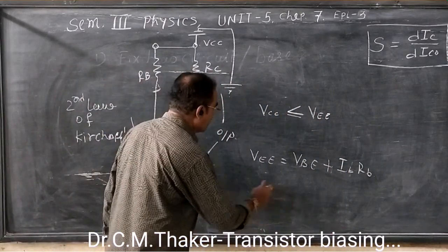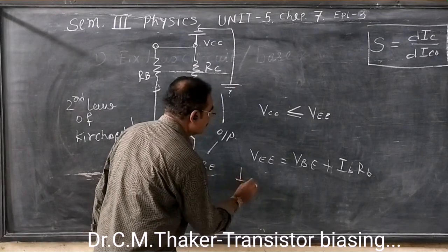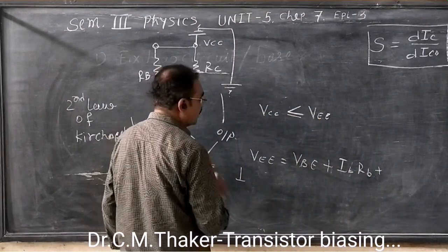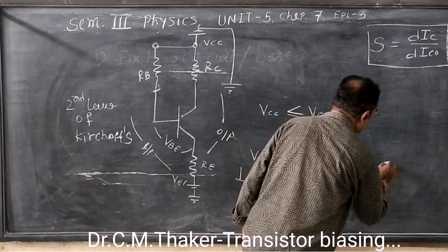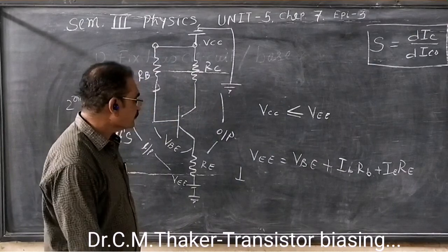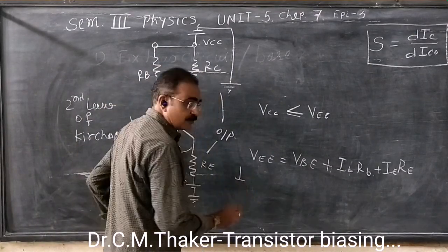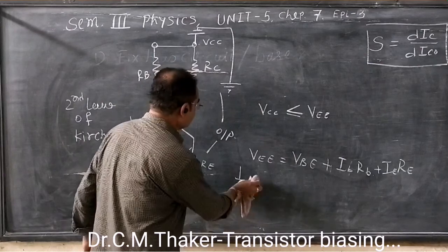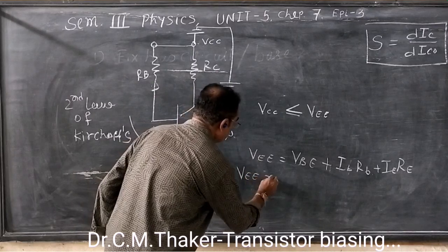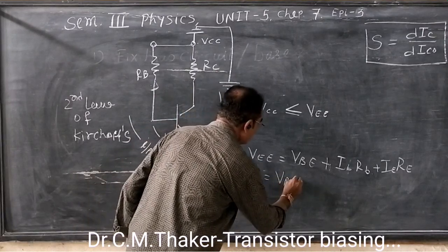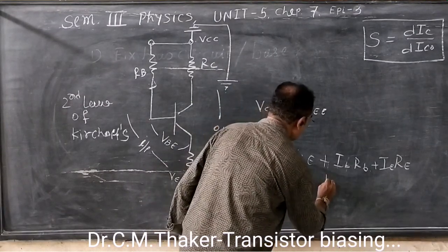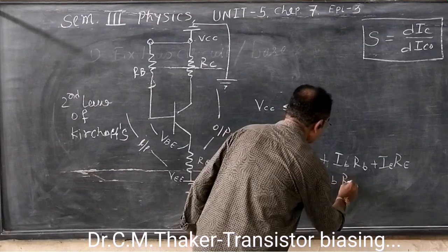And that is why IB plus IE times RE. So VEE minus VBE is equal to IB times RB plus IE times RE.